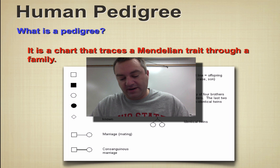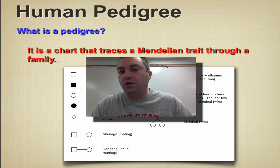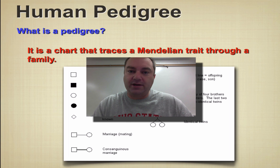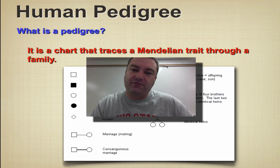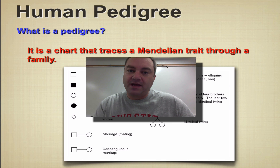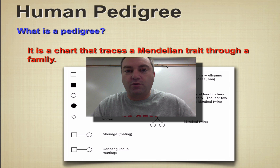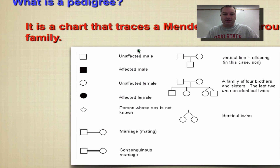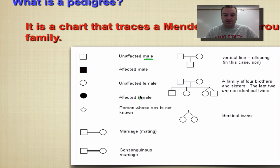Basically we're going to find out who's homozygous dominant, who's heterozygous, and who's homozygous recessive. We can find all of that inside a pedigree. Before we show you what a pedigree looks like, I want to go over the symbols. Pay attention to this chart. First, squares are males and circles are females.